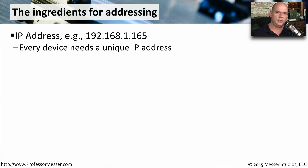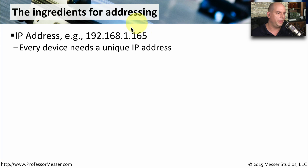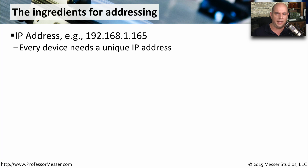When you're configuring a TCP IP address on a workstation, you generally need three things. The first one is going to be the IP address itself. Usually this is an IPv4 address, so it'll have four numbers associated with it, like 192.168.1.165. Every device on your network is going to have a completely different and unique IP address.